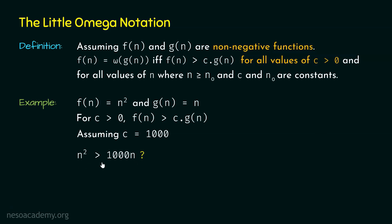To prove whether this inequality is true, we solve it to find for which values of N it is satisfied. We have n² on the left and 1000n on the right. Cancelling N from both sides, we get N greater than 1000. So for all values of N greater than or equal to 1001, this inequality is satisfied — N0 is 1001. This confirms the inequality is true for C equal to 1000.